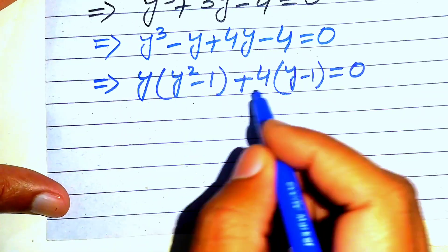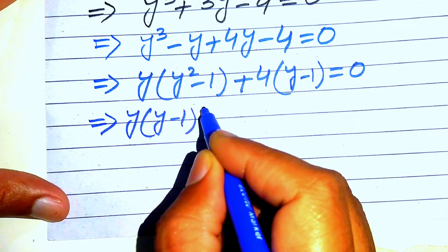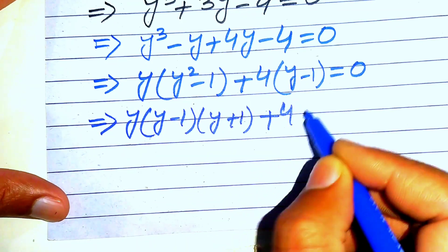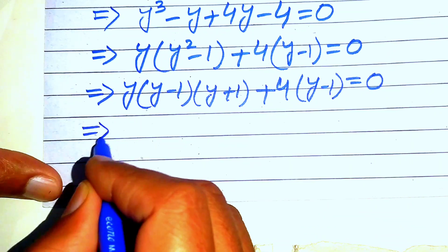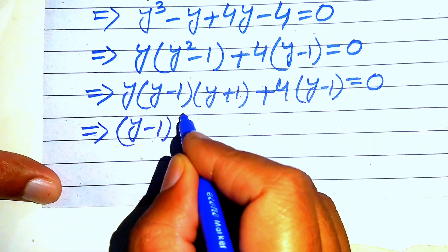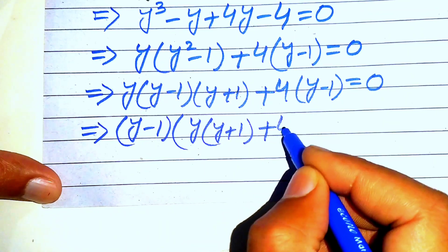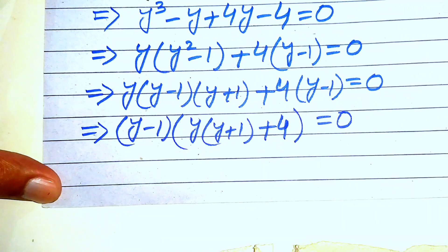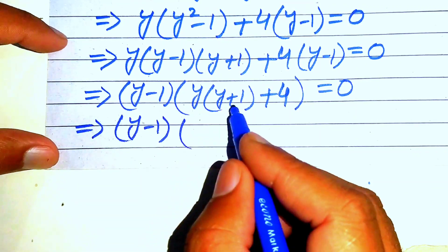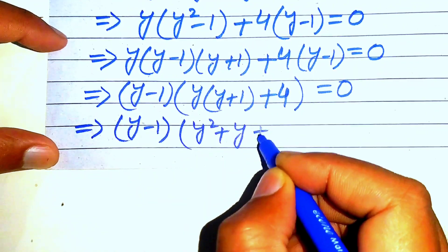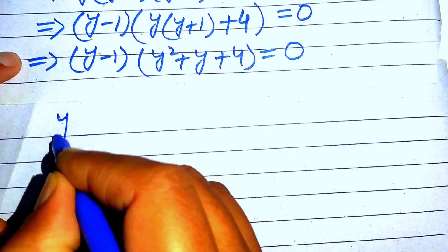We expand y²−1 as (y−1)(y+1), so the equation becomes (y−1)(y+1) + 4(y−1) = 0. Taking (y−1) as the common factor: (y−1)[(y)(y+1) + 4] = 0, which simplifies to (y−1)(y² + y + 4) = 0.